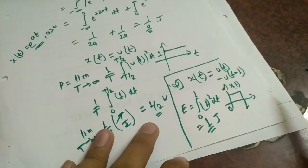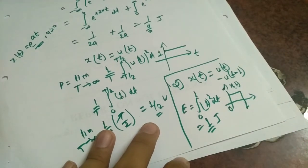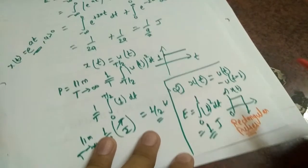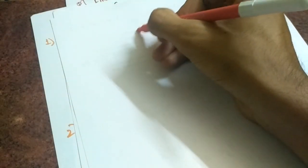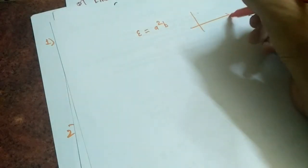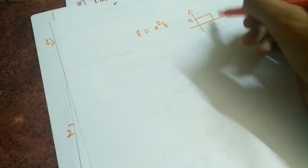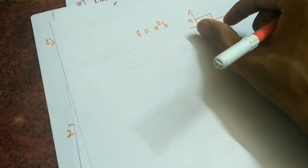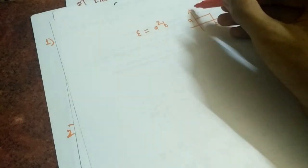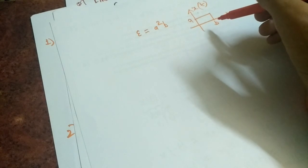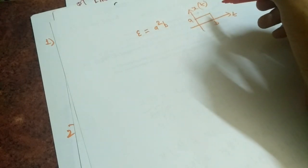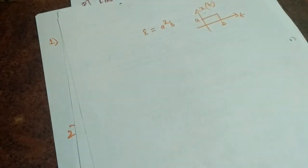An important conclusion for rectangular pulses: for a rectangular pulse, energy is given directly by A² × B, where A is the magnitude (amplitude) and B is the time extent along the t-axis. So magnitude squared times the width gives the energy directly. This formula is valid for rectangular pulses and square pulses as well. That is all for this lecture — see you in the next one.